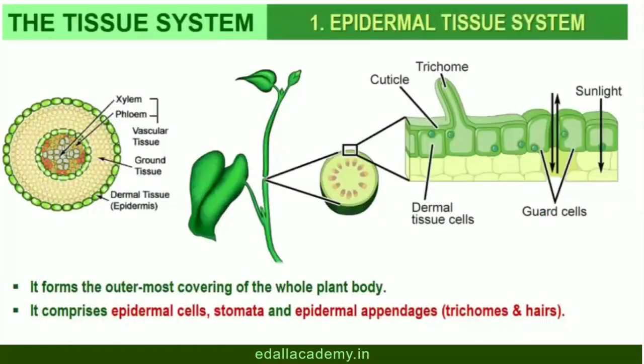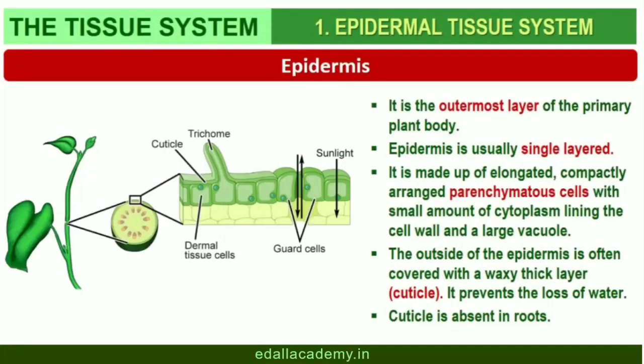Epidermal Tissue System. The epidermal tissue system forms the outermost covering of the whole plant body and comprises epidermal cells, stomata, and epidermal appendages such as trichomes and hairs. The epidermis is the outermost layer of the primary plant body, made up of elongated, compactly arranged cells forming a continuous layer. Epidermis is usually single-layered. Epidermal cells are parenchymatous with a small amount of cytoplasm lining the cell wall and a large vacuole. The outside of the epidermis is often covered with a waxy thick layer called the cuticle, which prevents the loss of water. Cuticle is absent in roots.